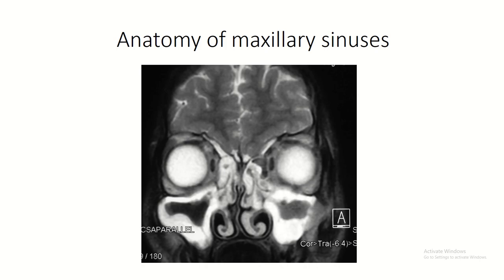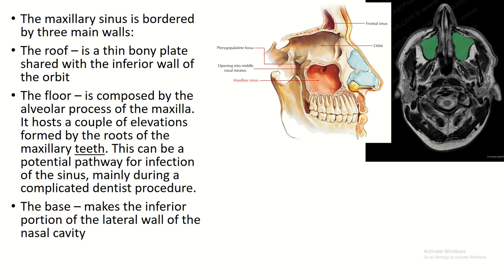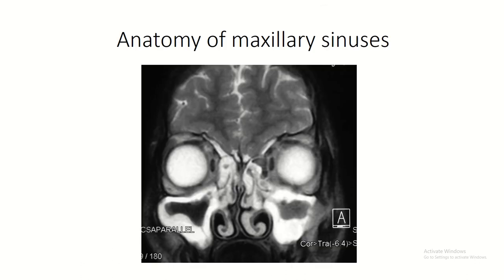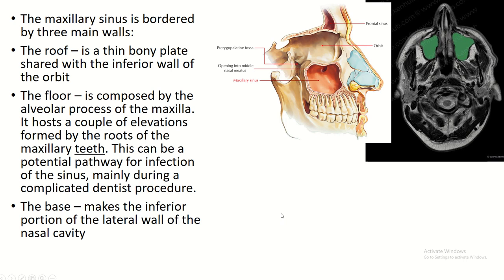Anatomy of the maxillary sinus. This is the maxillary sinus, and this is the maxillary sinus with thickened mucosa. The maxillary sinus has three walls: roof, floor, and the base.